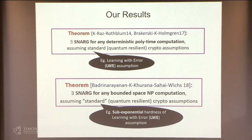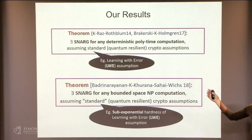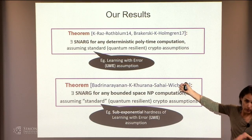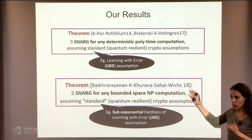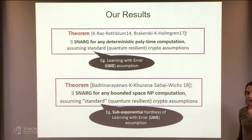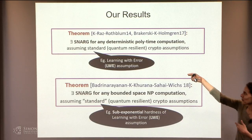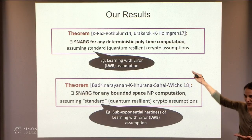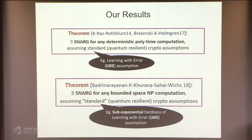The reason I mention quantum resilience: we only delegate classical computations here, but the assumption is quantum resilient. The cheating prover might have quantum capability — we don't want him to cheat. Because it's LWE, we assume he doesn't break it. Another reason I stress it: at the end of the talk, I want to encourage getting this result for quantum computation, in which case we really want the assumption to be quantum resilient.